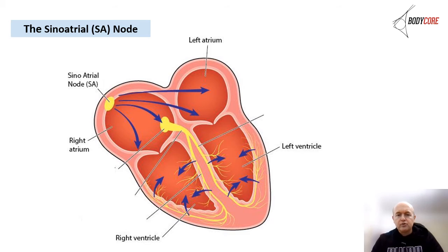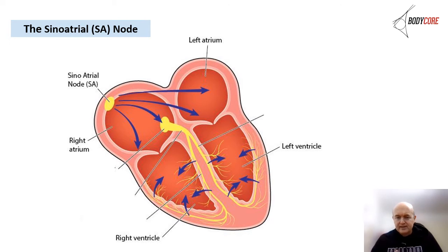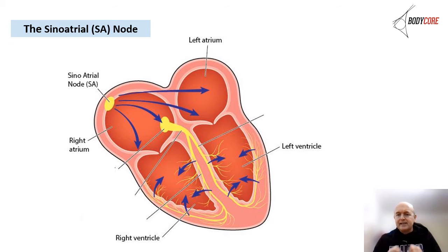Now we'll look at electrical impulses and the sinoatrial node — fundamentally the heart's own pacemaker. It generates electrical impulses and conducts them through the heart muscle, stimulating the heart to contract and pump. All cells communicate with each other, controlled by the SA node. Electrical impulses come into the sinoatrial node and it sends a message to all the other electrically excitable cells in the heart, to fire in a coordinated fashion.